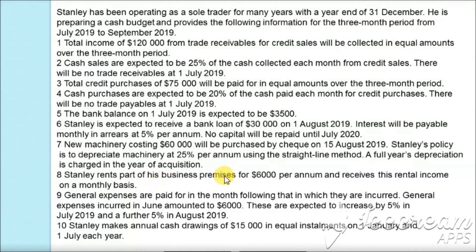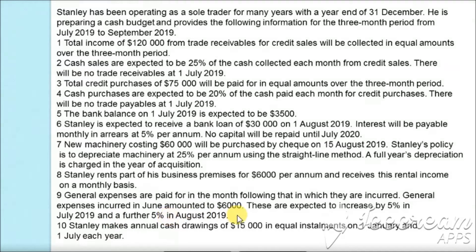Stanley rents part of his business premises for $6,000 per annum and receives this rental income on a monthly basis. General expenses are paid in the month following the one in which they are incurred. General expenses incurred in June amounted to $6,000. They are expected to increase by five percent in July 2019 and a further five percent in August 2019. Stanley makes annual cash drawings of $15,000 in equal installments on 1st January and 1st July each year.